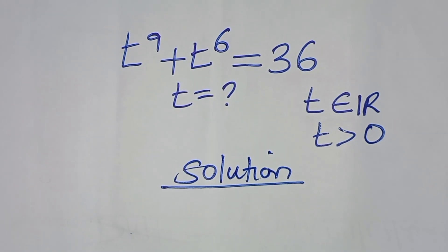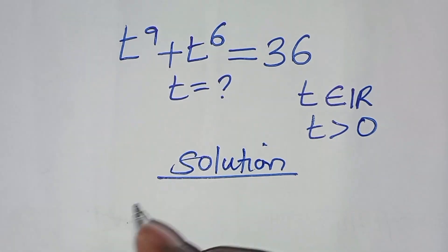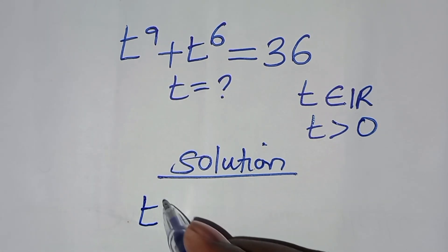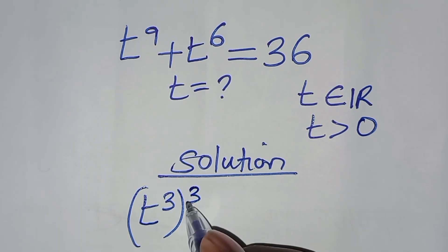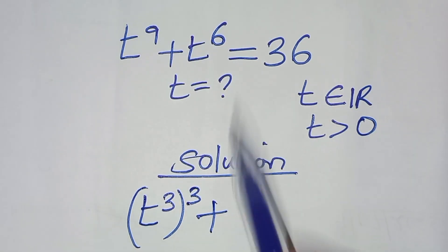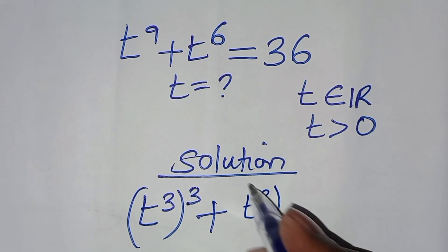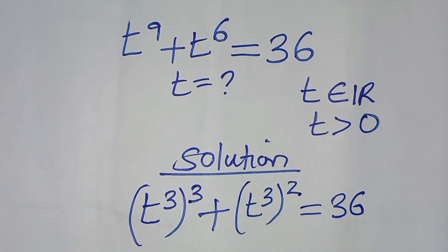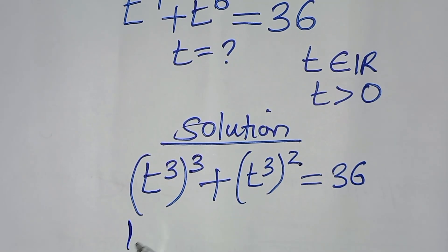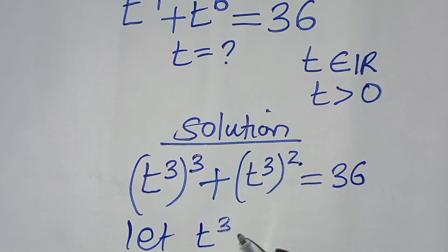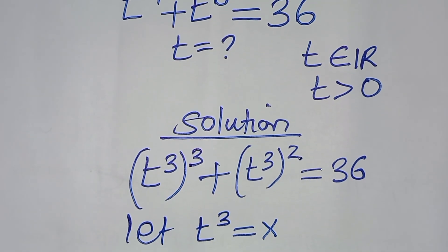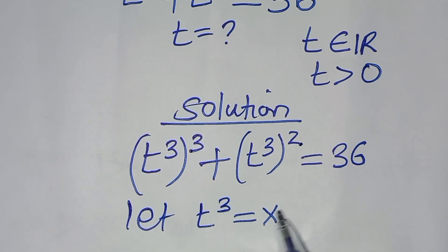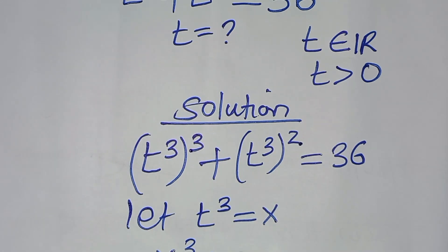We can express t to the power 9 as t to the power 3, raised to the power 3, plus t to the power 6 expressed as t to the power 3, raised to the power 2, this is equal to 36. Let t to the power 3 be equal to x, so substituting t to the power 3 with x, we'll have x to the power 3 plus x squared, this is equal to 36.